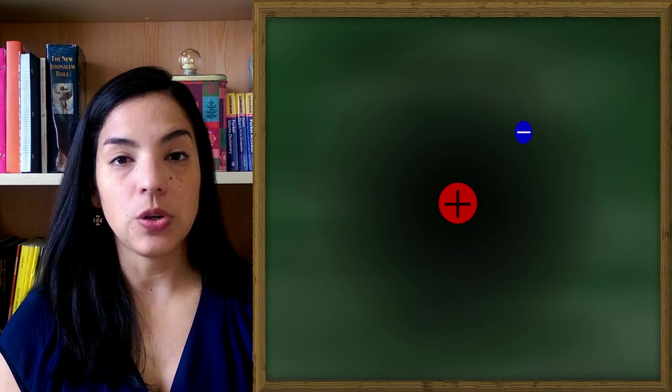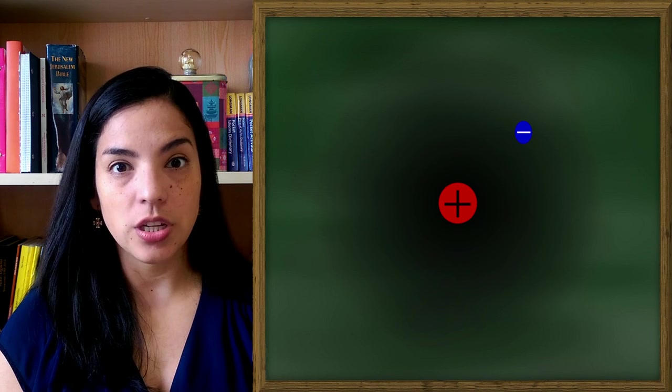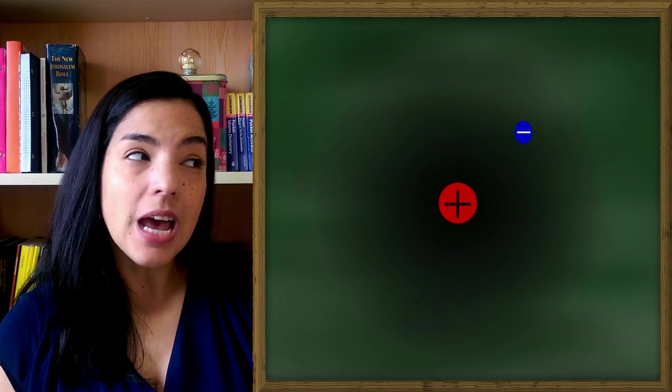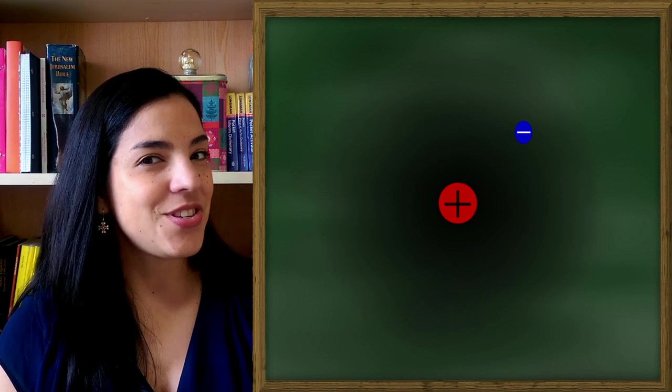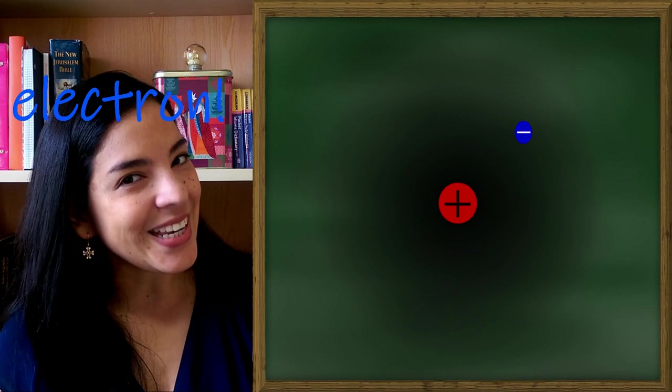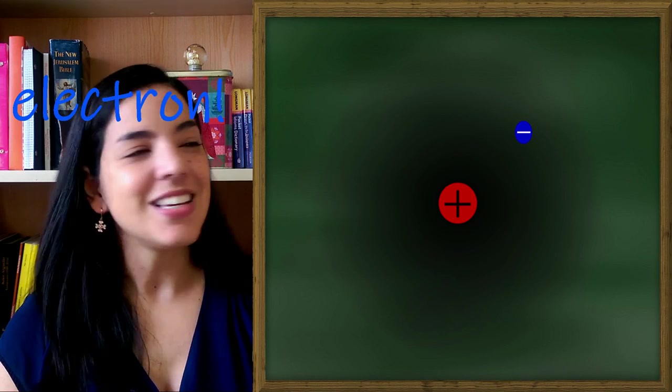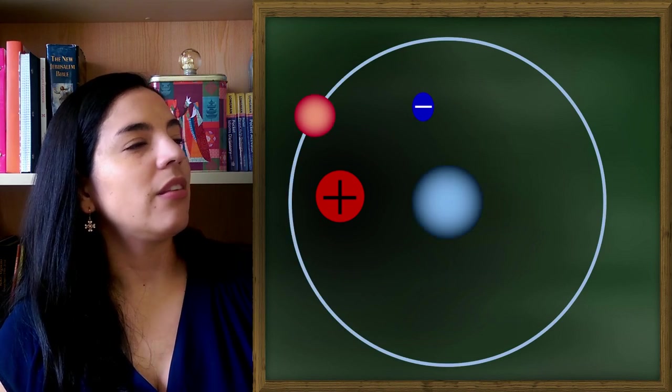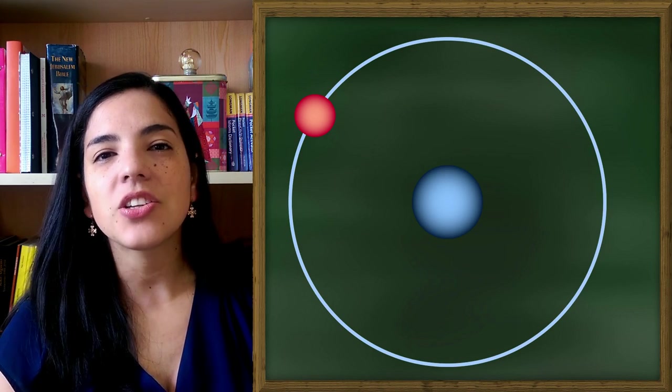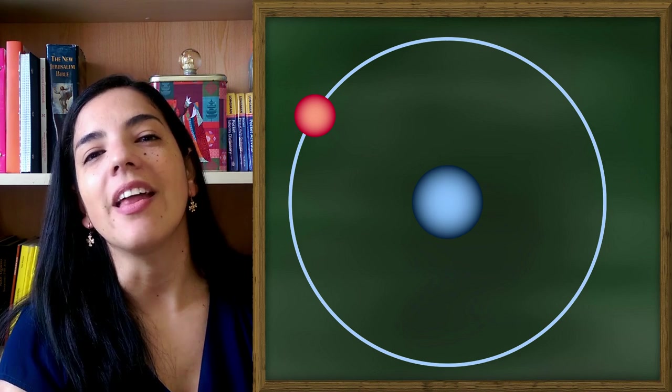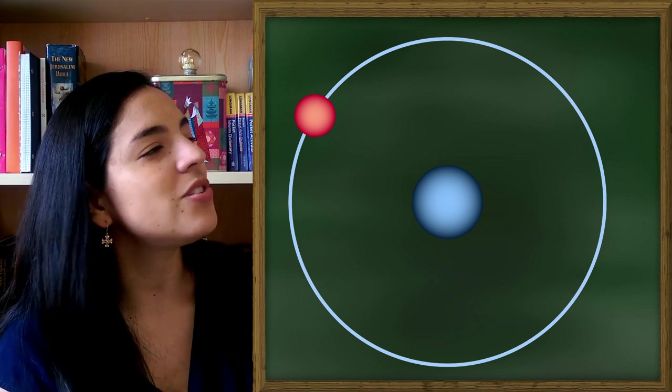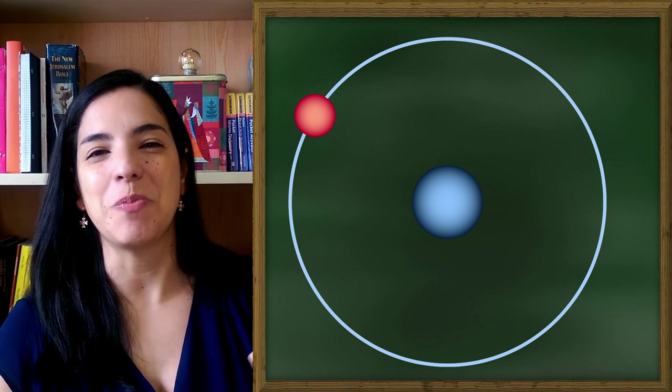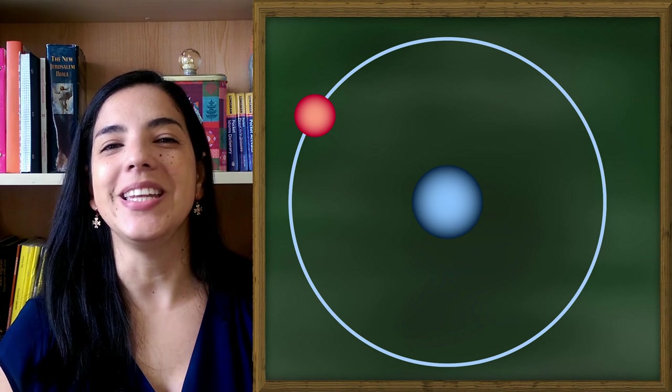And what defines what element this atom is going to be is the number of protons. If it has one proton, it's going to be hydrogen. But since the proton has a positive charge, it needs around it something with a negative charge. Right, you guessed it right. So this is going to be our hydrogen atom. The connection between the electron and the proton, they don't even understand completely yet. So we just say that it's there.